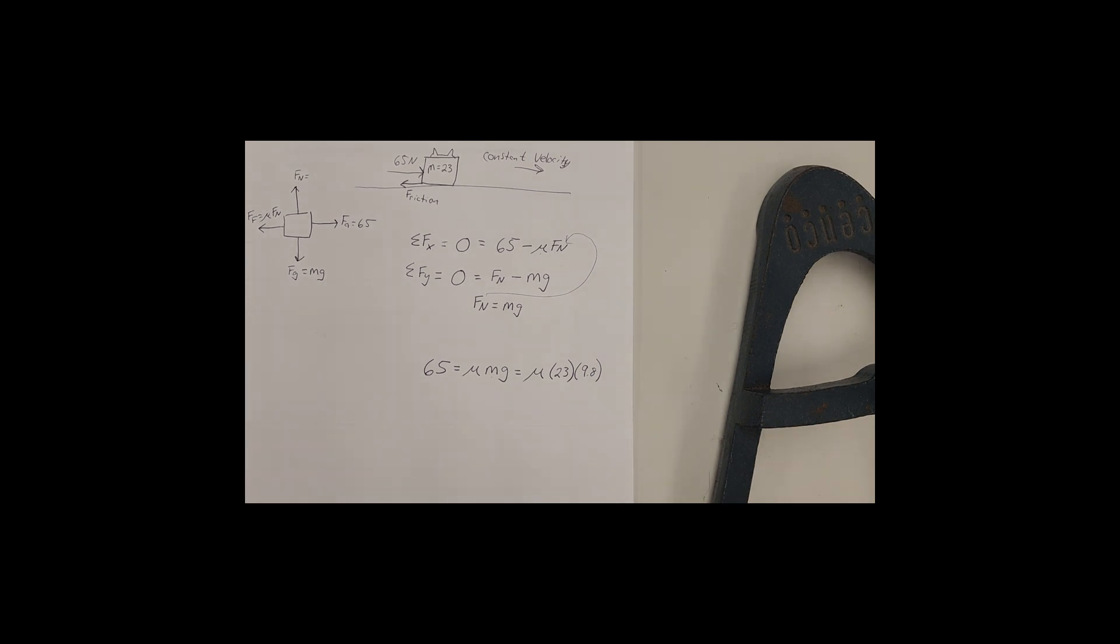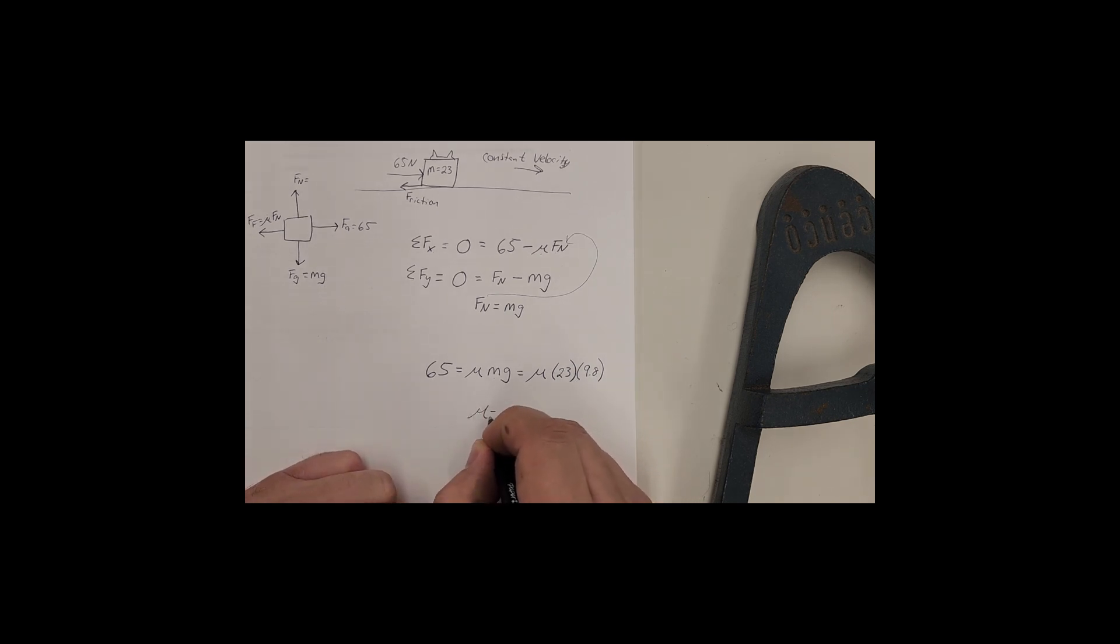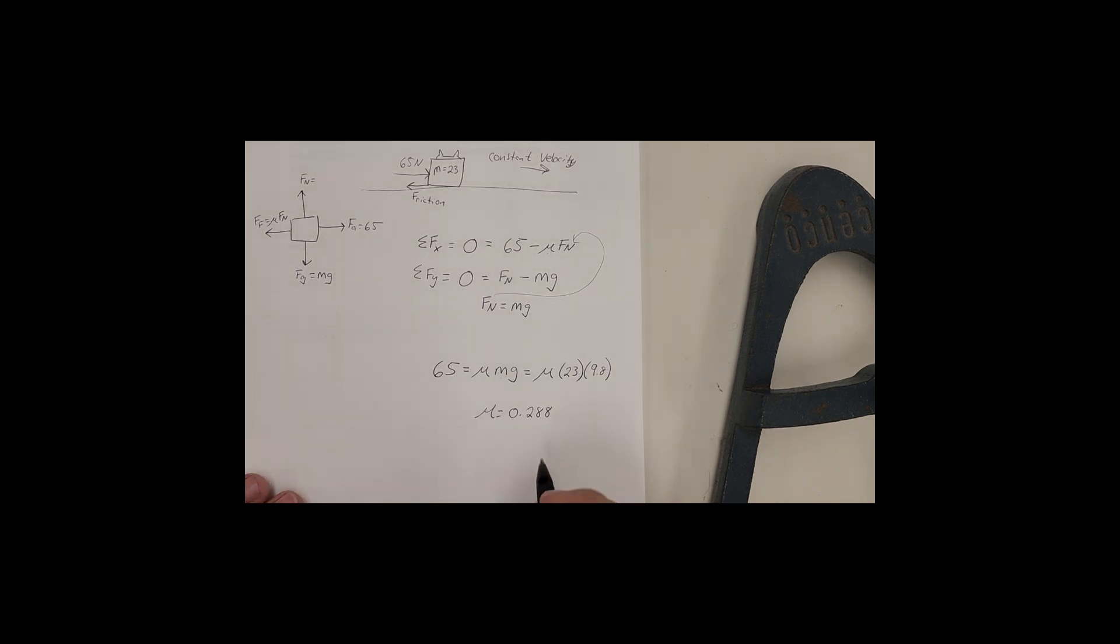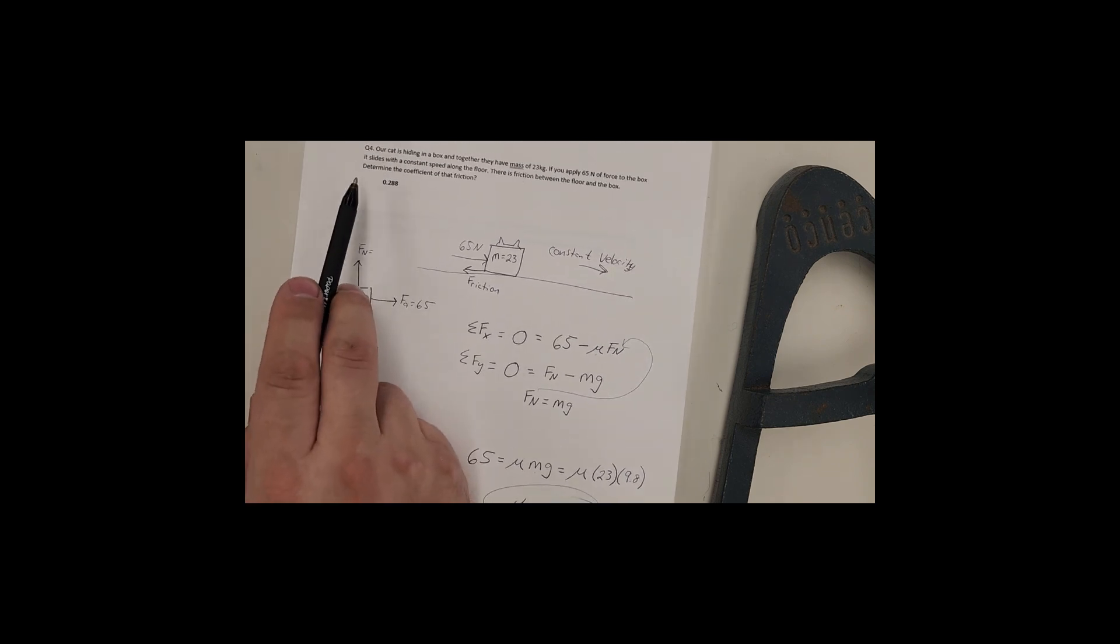So to solve for mu, I just take my 65. And I need to divide it by whatever 23 times 9.8 is. And for an answer, I get that mu is equal to 0.2, I guess it would go to 2.88, which is what our answer is up here. So that's how we end up getting our mu.